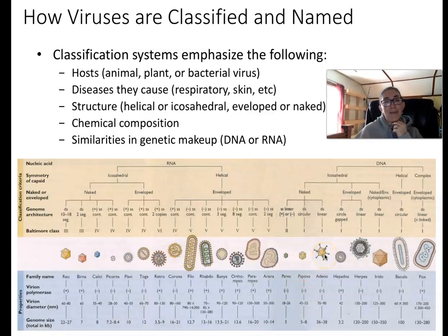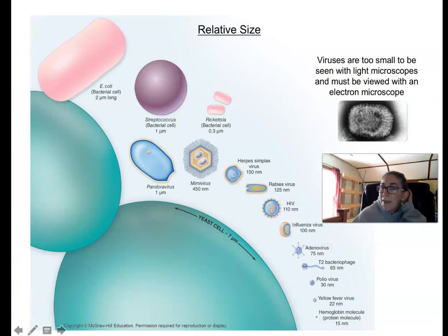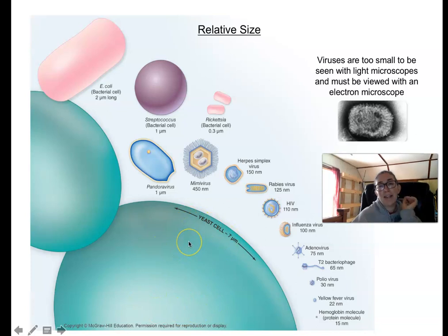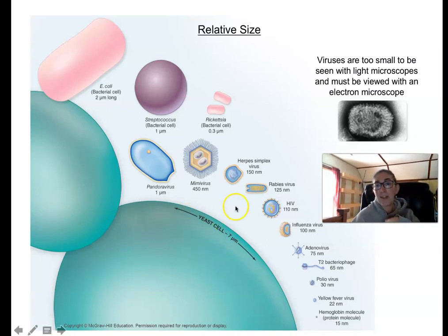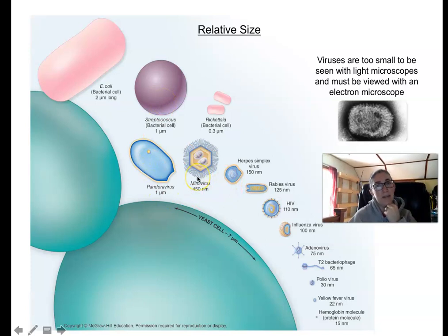Viruses are incredibly small. A yeast cell — already smaller than a red blood cell — looks huge by comparison, but we can still see yeast cells and bacteria like E. coli and Streptococcus under a light microscope. The largest viruses are still significantly smaller than a Streptococcus — we can't quite see them in a light microscope. Most viruses relevant to human health are very tiny and cannot be seen with a light microscope.